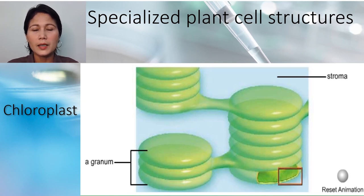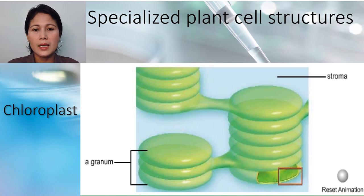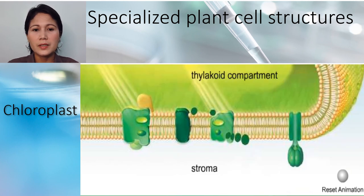In many chloroplasts, these compartments stack one atop another. Each stack is a granum. Embedded into the thylakoid membrane are the light-trapping pigments, enzymes, and other proteins that carry out the first stage of photosynthesis.